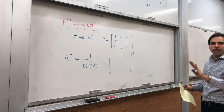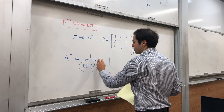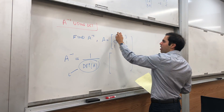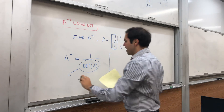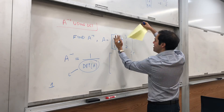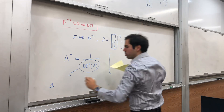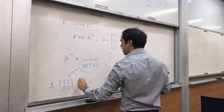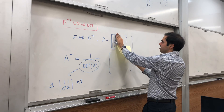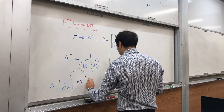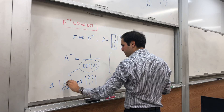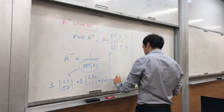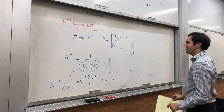First of all, let's quickly find the determinant. Let's expand it out along the first column. Then you get 1 times the determinant of [1, 1; 0, 2], minus 0 times whatever, plus 1 times the determinant of [2, 3; 1, 1]. If you do that, you get 2 + 2 − 3, and that's 1. So the determinant is 1, which is nice.